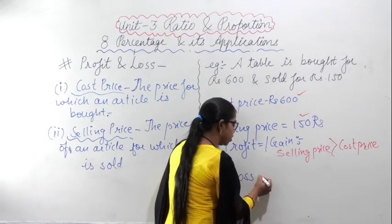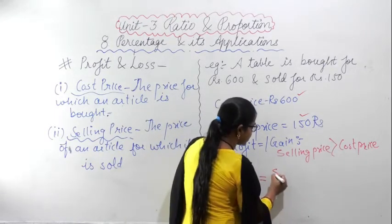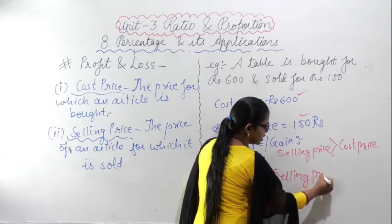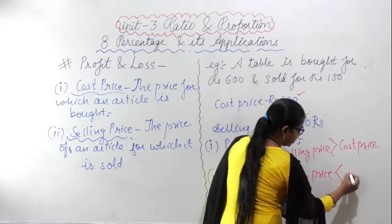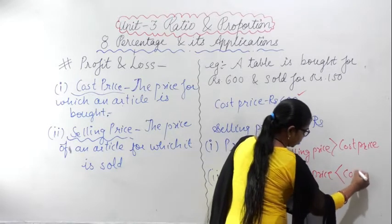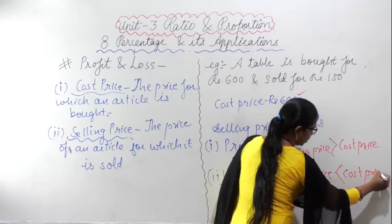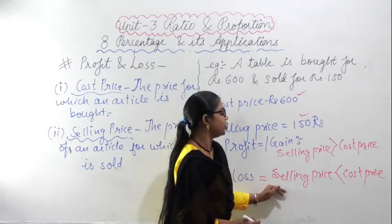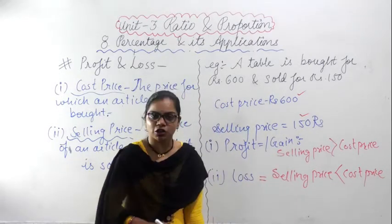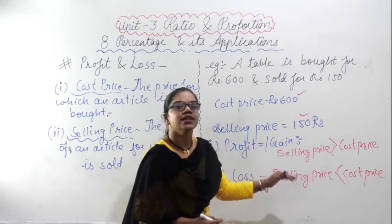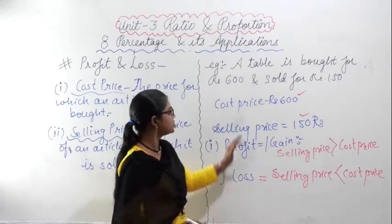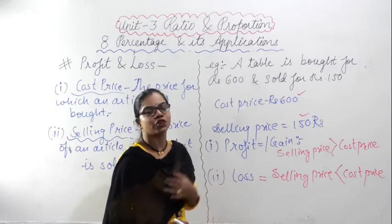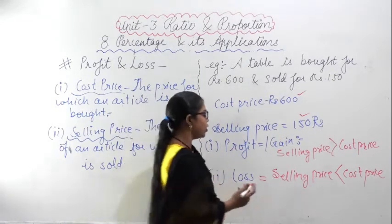Similarly, for the condition of loss, the cost price will be greater than the selling price, and you will have a loss. The cost price is Rs. 600 and the selling price is Rs. 150, so cost price is greater than selling price — you are getting a loss of Rs. 450.